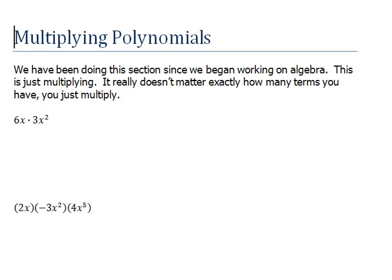For this very first problem, we have 6x times 3x squared, so again we're multiplying monomials. I'm going to go through this the complete written-out way so you can see exactly what's happening, and then we're going to learn to take some shortcuts. So if we say 6x, that literally means 6 times x, and then 3x squared literally means 3 times x times x, and we're multiplying those things together.